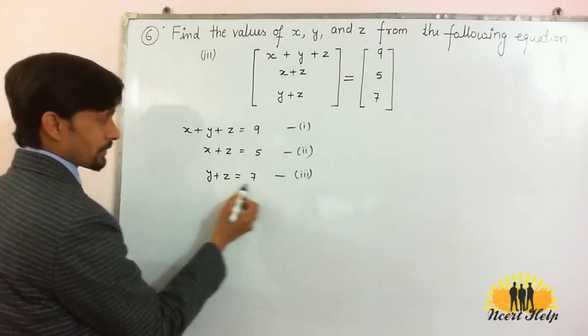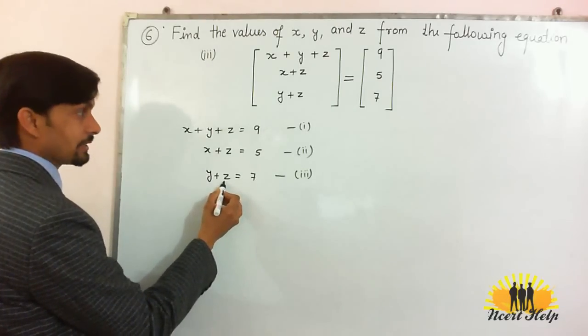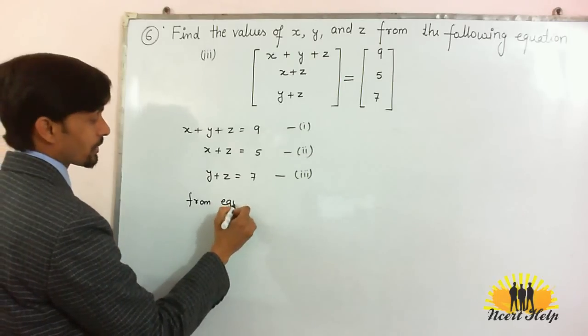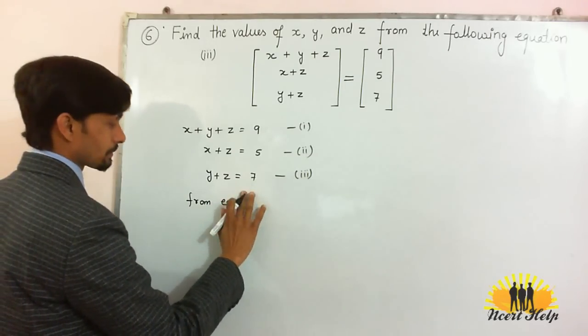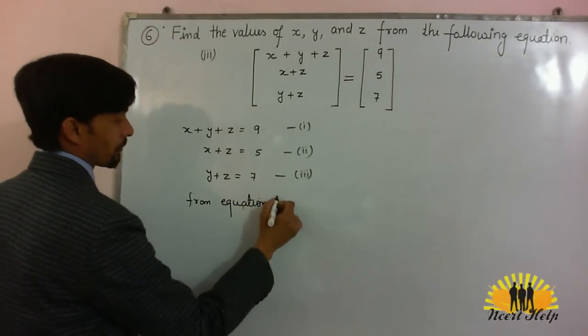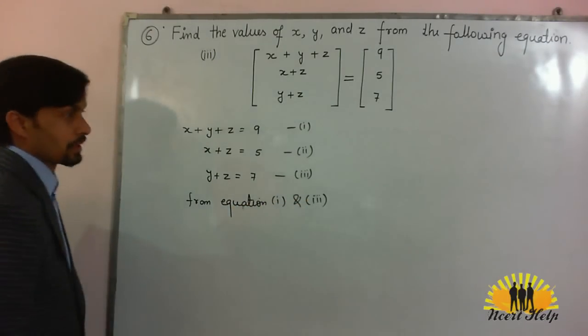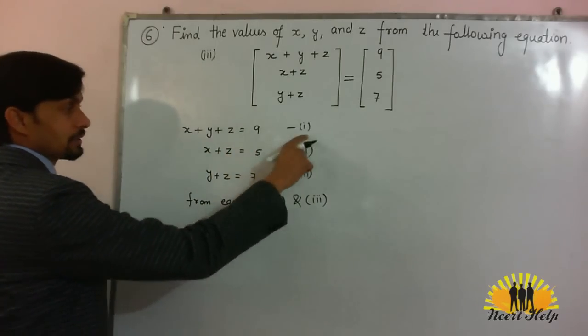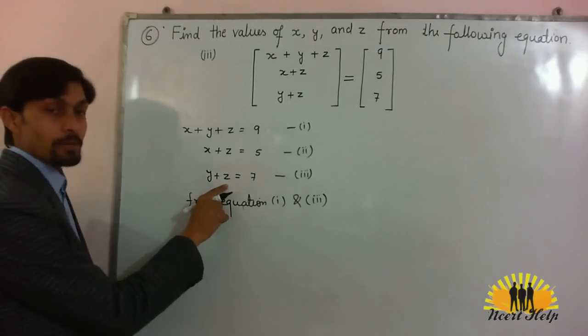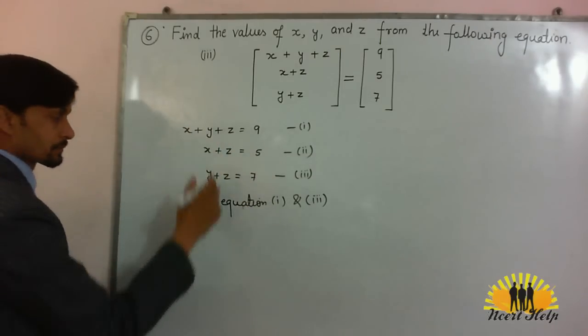From the third equation, put the value of y plus z in the first. So we can write from equation first and third. Using equation first and third, just putting the value of y plus z which is 7 in equation number 1.